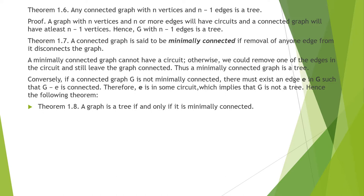Next theorem: any connected graph with n vertices and n minus 1 edges is a tree. The proof is: a graph with n vertices and n or more edges will have circuits. A connected graph will have at least n minus 1 edges. Hence G with n minus 1 edges is definitely a tree.